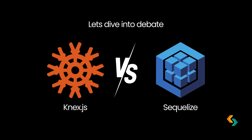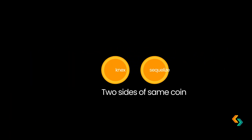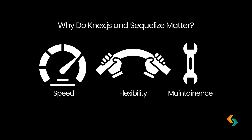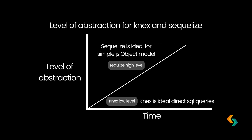First, let's talk about the importance of choosing the right database tool. Both Knex.js and Sequelize are highly trusted, but they're like two sides of a coin. The choice you make can impact development speed, flexibility, and long-term maintenance. With Knex.js, you get low-level SQL control, perfect for performance tweaks. With Sequelize, you gain an ORM's abstraction layer, which can simplify complex apps. Knex is ideal when SQL is your language of choice. Sequelize shines when you want to think purely in JavaScript. Let's break down their unique features to see where each excels.